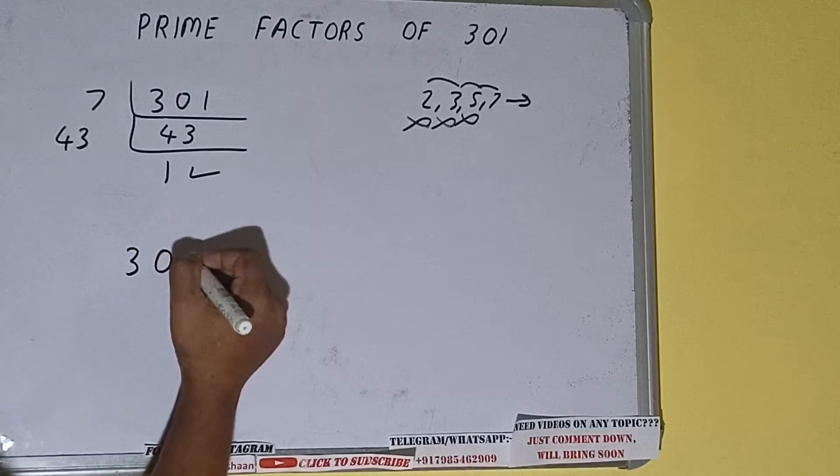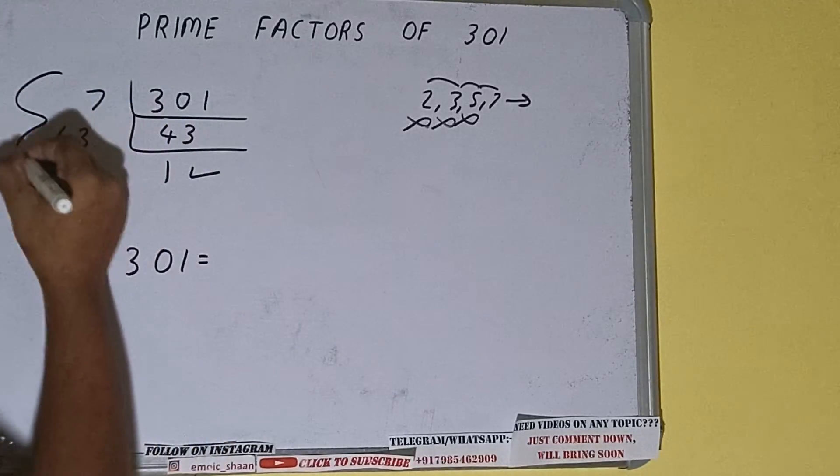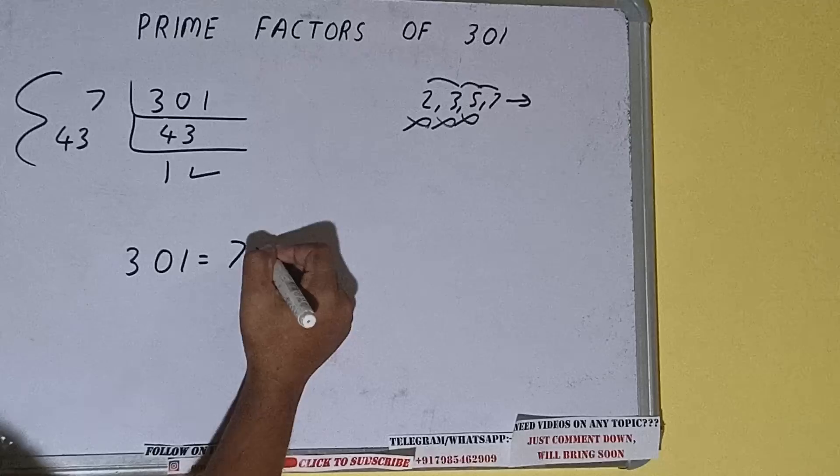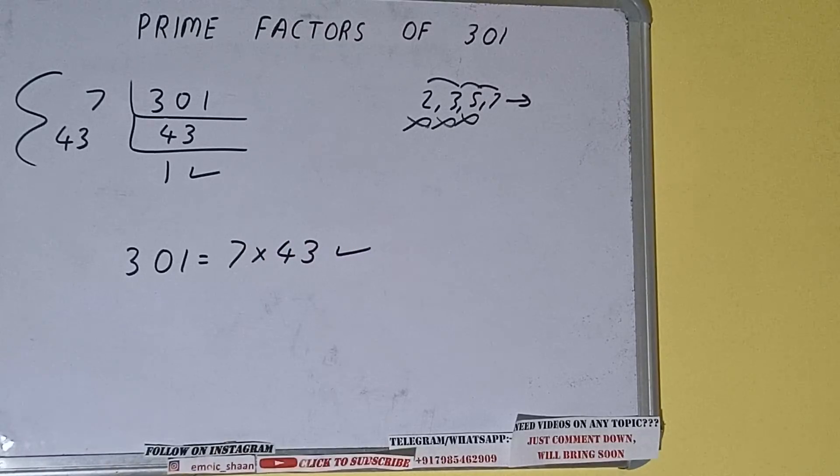The prime factors of 301 will be whatever we have on the left-hand side, that is 7 × 43. That will be the answer. So this is all about prime factors of 301.